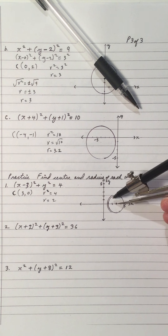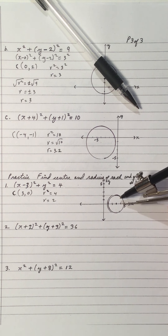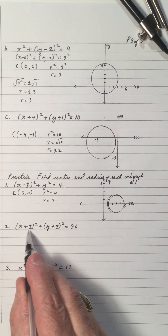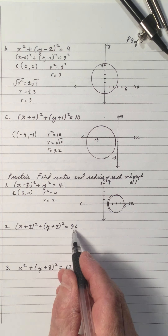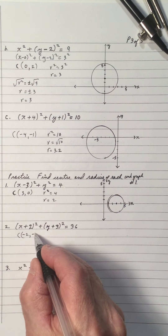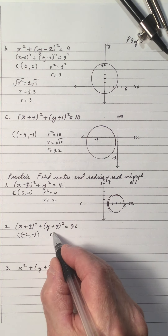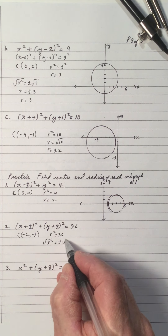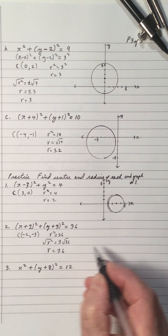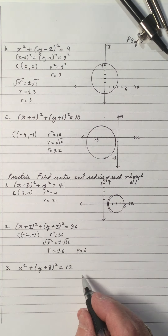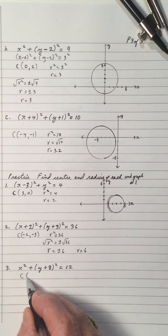From the center, going vertical you get 2, going down vertical you get 2, going horizontal right you get a radius of 2, and going horizontal left you get a radius of 2. For (x plus 2) all squared plus (y plus 3) all squared equals 36: the center is (negative 2, negative 3). R squared equals 36, so r equals 6. The radius can only be positive, so r equals 6.